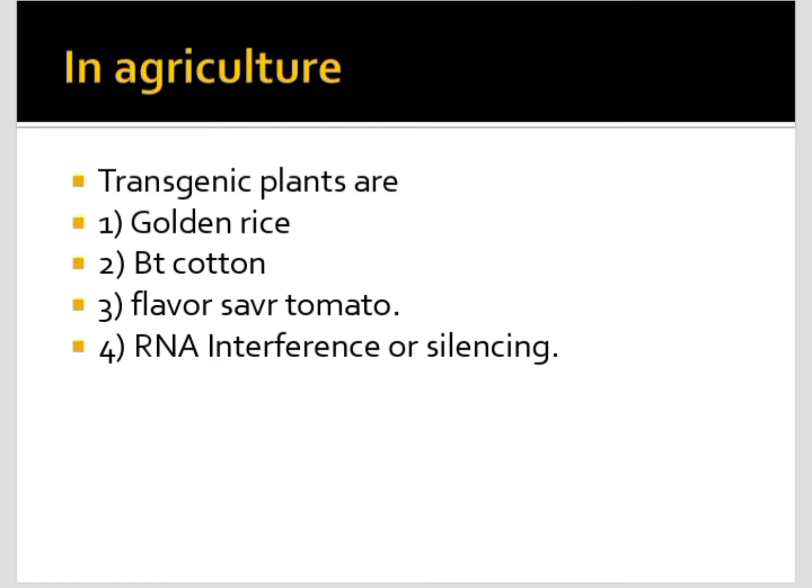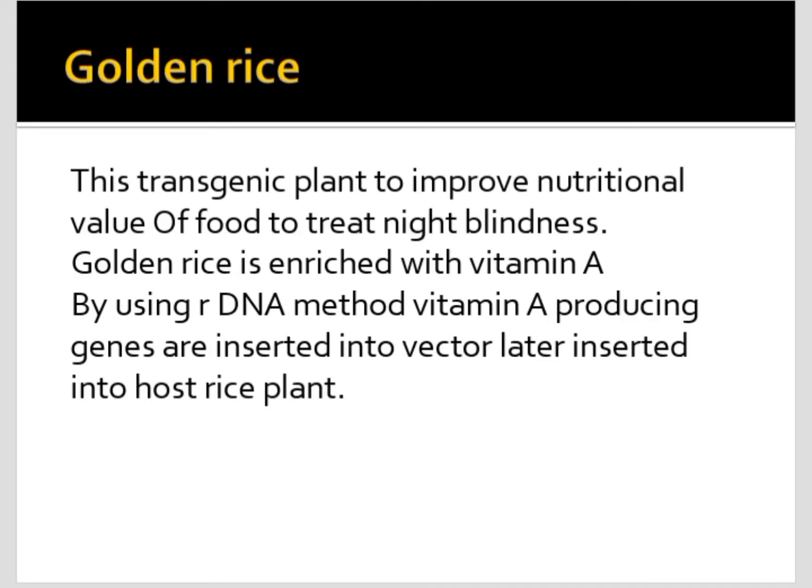Biotechnology is used to improve all these things in transgenic plants. A few examples using rDNA technology in agriculture are: golden rice, Bt cotton, Flavr Savr tomato, and RNA interference or silencing. We will discuss each one of them.